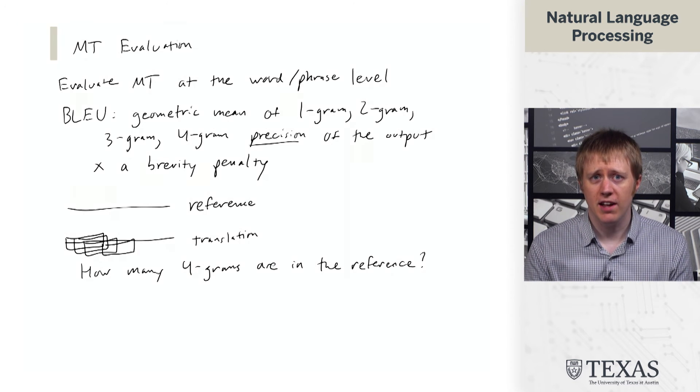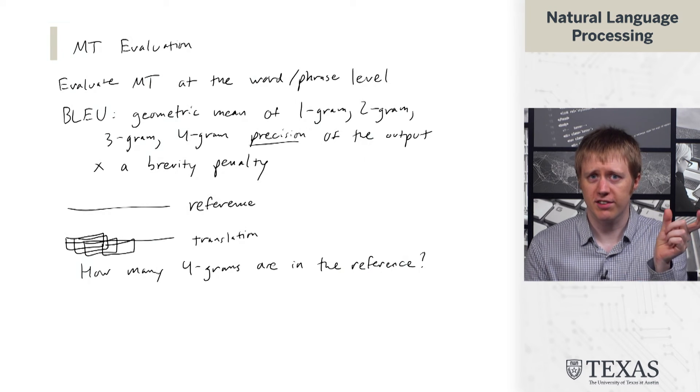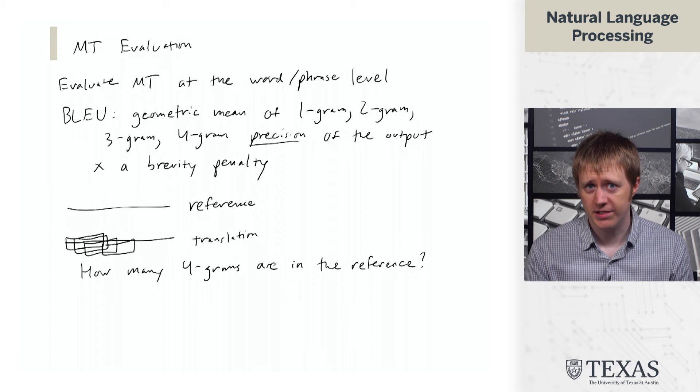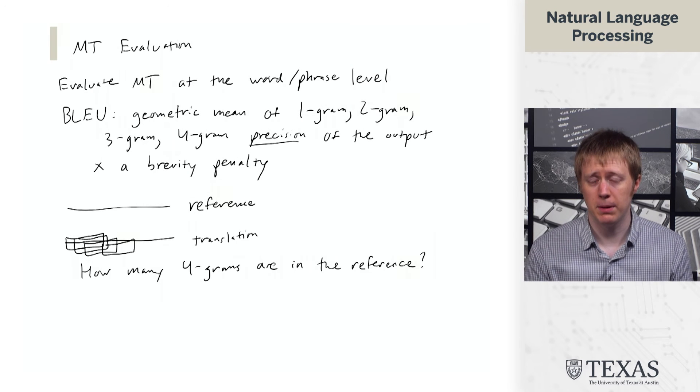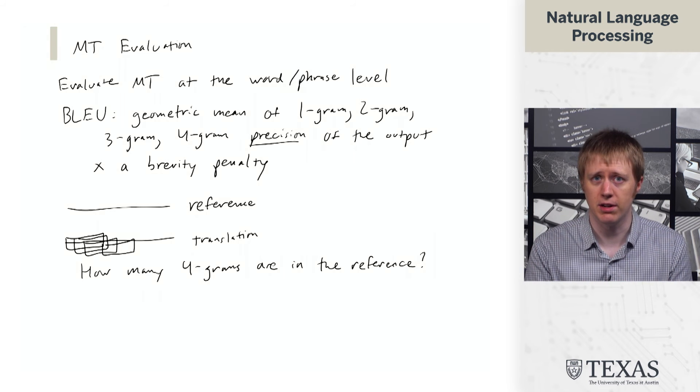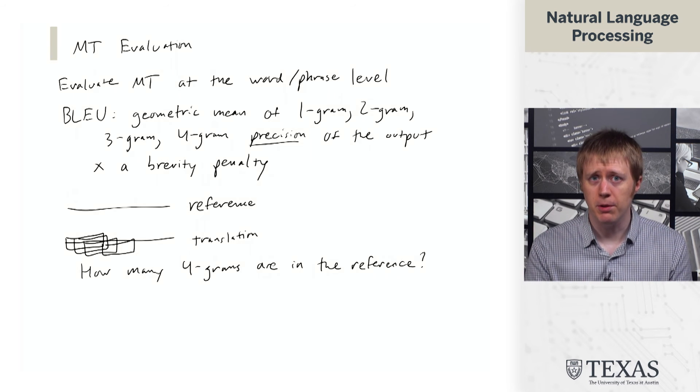So what this does is it just sort of slides a window through this translation and checks it against the reference. Now, what this doesn't handle is ambiguity. You could do that a little bit by having multiple references, multiple valid translations that someone's written down. And people do have that on some of the test sets that they use.